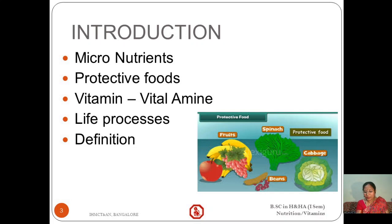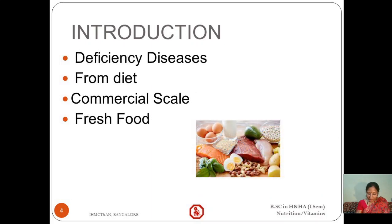A vitamin is a term used for a group of potent organic compounds — other than proteins, carbohydrates, and fats — which occur in minute quantities in food and are essential for specific body functions and good health. Absence of vitamins in our regular diet may result in diseases called deficiency diseases. Many vitamins cannot be synthesized in adequate amounts by the human body and must therefore be obtained from the diet.